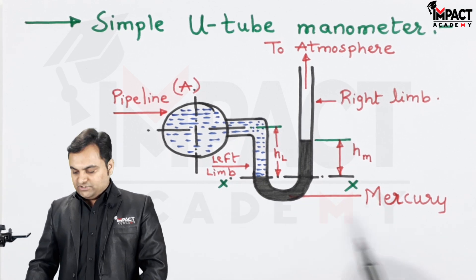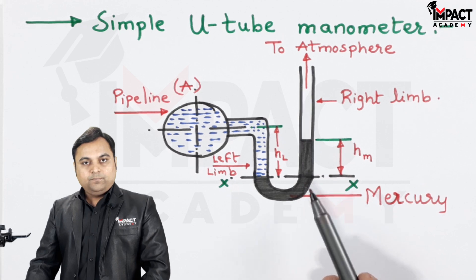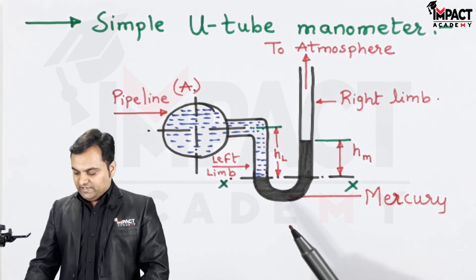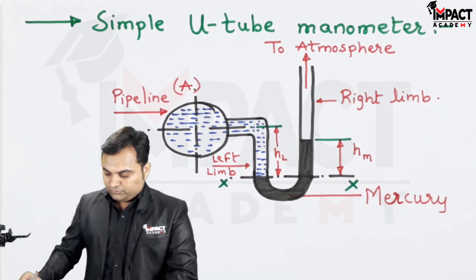Now, in order to measure the pressure, we have to take a section XX and balance both the left limb and right limb. For example, I am going to write here the intensity of pressure.